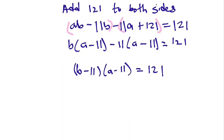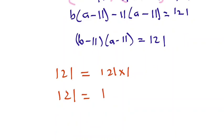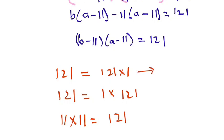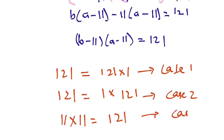Now we know that 121 can be factored in three ways: 121 times 1, which is Case 1; 1 times 121, which is Case 2; and 11 times 11, which is Case 3. All three equal 121.